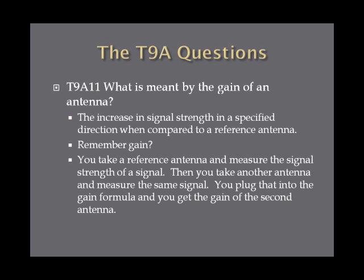What is meant by the gain of an antenna? Gain is the increase in signal strength in a specified direction when compared to a reference antenna. You take a reference antenna and measure signal strength, then measure the same signal with another antenna. Plug those two numbers into the gain formula and you get the gain of the second antenna in decibels.